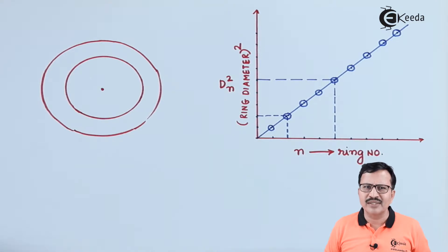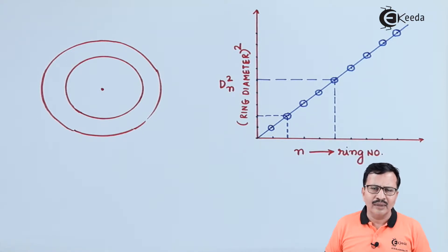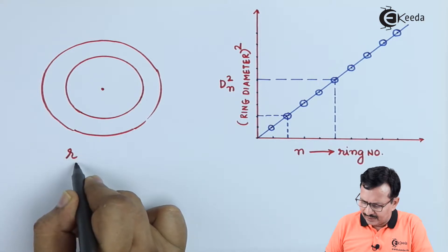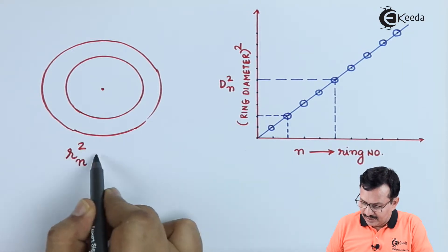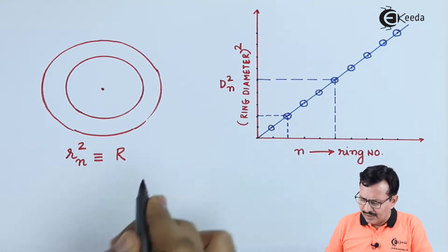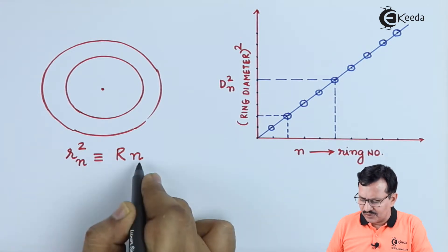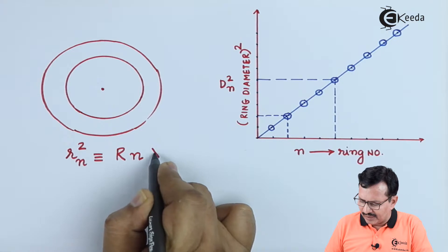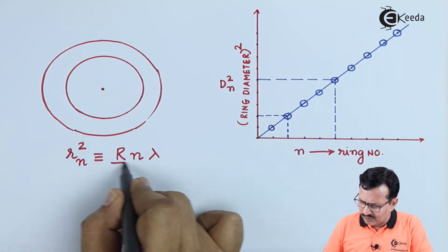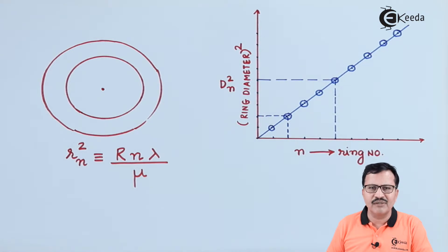We all know from Newton's rings experiment that the radius squared of the Newton's rings is equal to R multiplied by n multiplied by lambda divided by mu. So the radius of the nth ring, rn squared, is equal to capital R — the radius of curvature of the plano-convex lens — multiplied by the order n, multiplied by lambda, the wavelength, divided by mu, which is the refractive index of the medium that exists between the plano-convex lens and the flat surface.